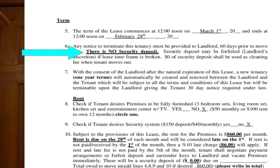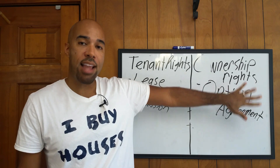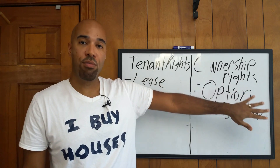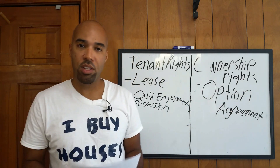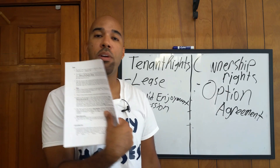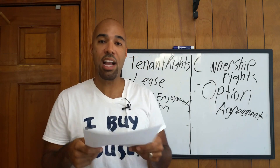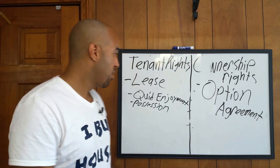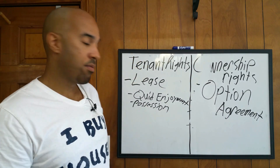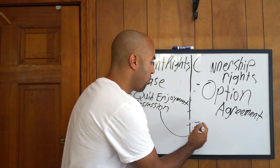Here's the golden nugget — don't miss this one: there is no security deposit. None, zilch, nada. I don't want you taking any money on this document, because over here we're going to get our down payment — this is where we get our option fee on another document. So when your tenant stops paying, all we have to do to get them out is go to eviction court. We have our lease, we exercise our possession, and we take possession back.